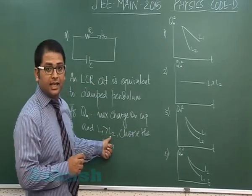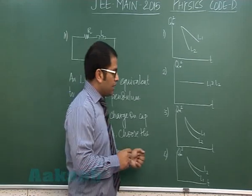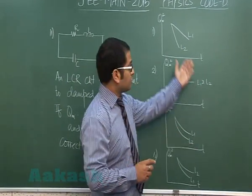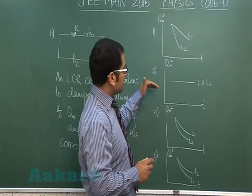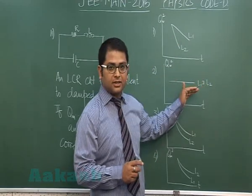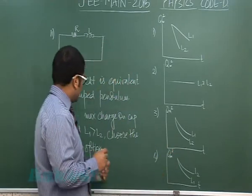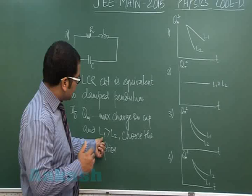A qualitative analysis would be more than enough. It's given L1 is greater than L2. First of all, you can use common sense that the variation can't be linear, so this would be ruled out. The charge on the capacitor would not be constant, so this would be ruled out.